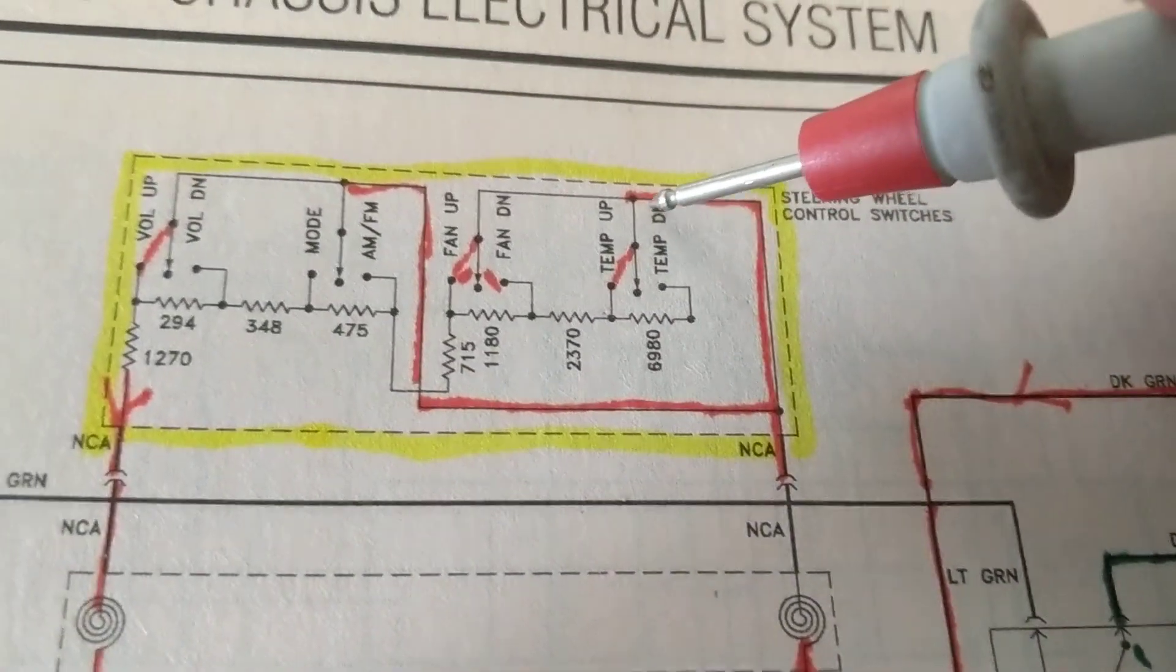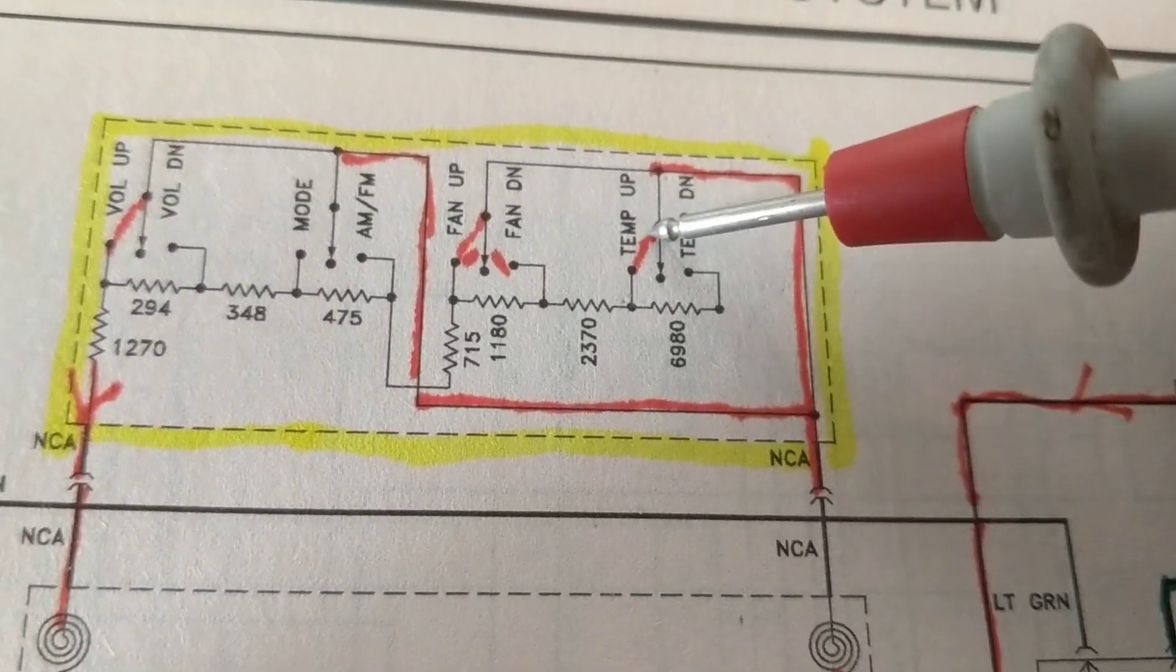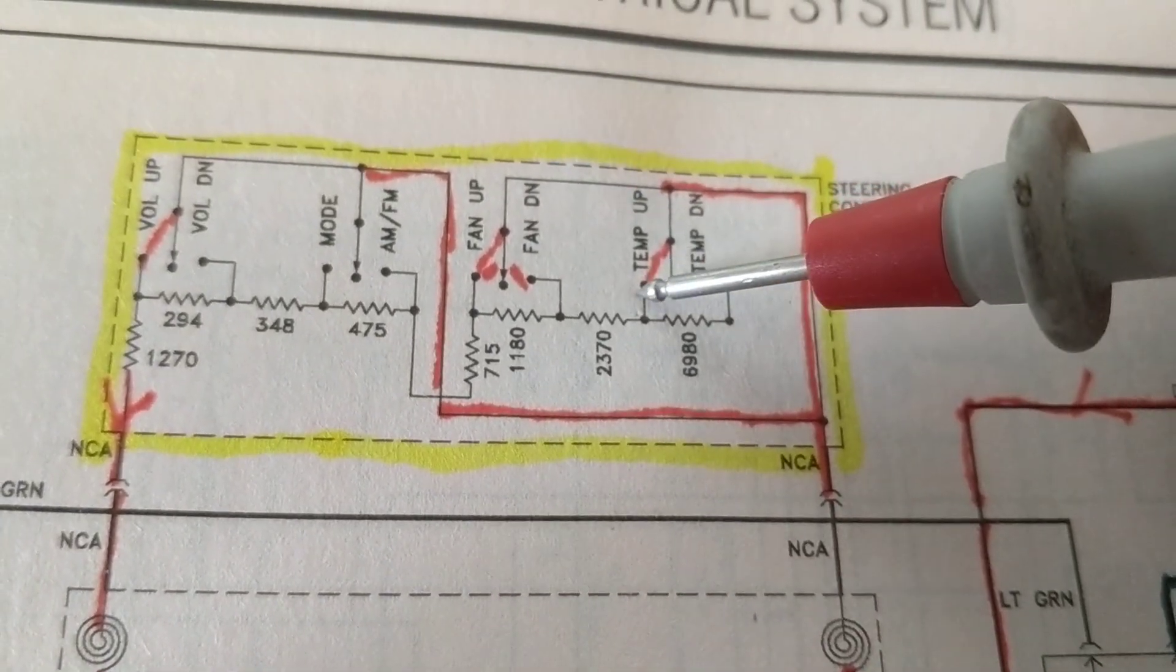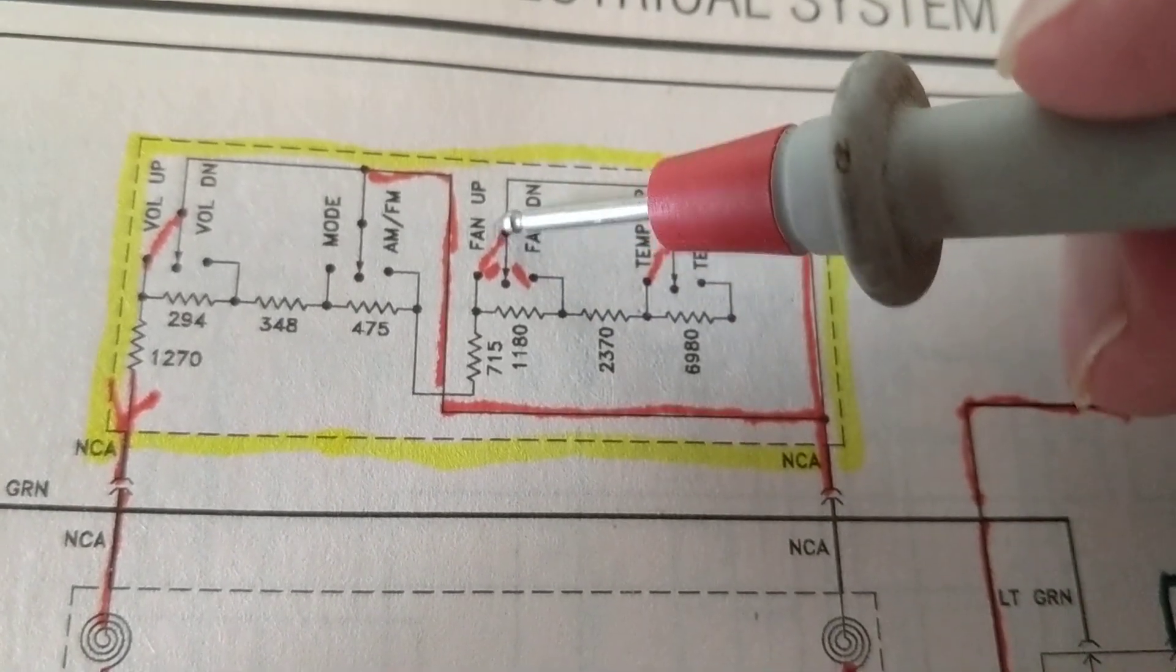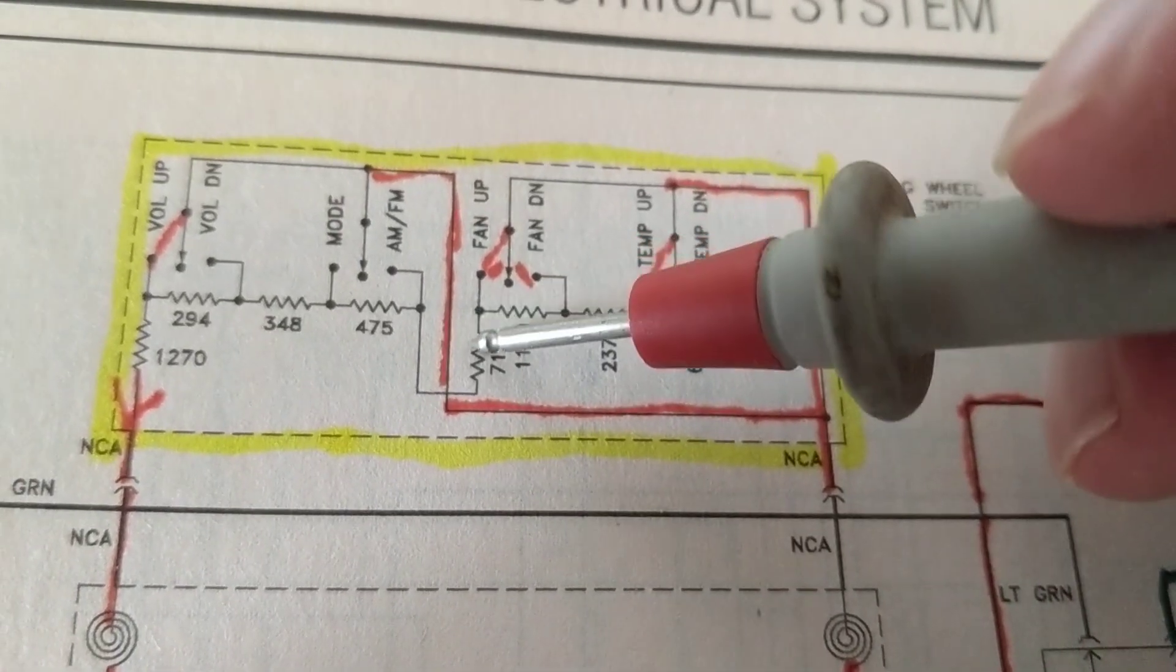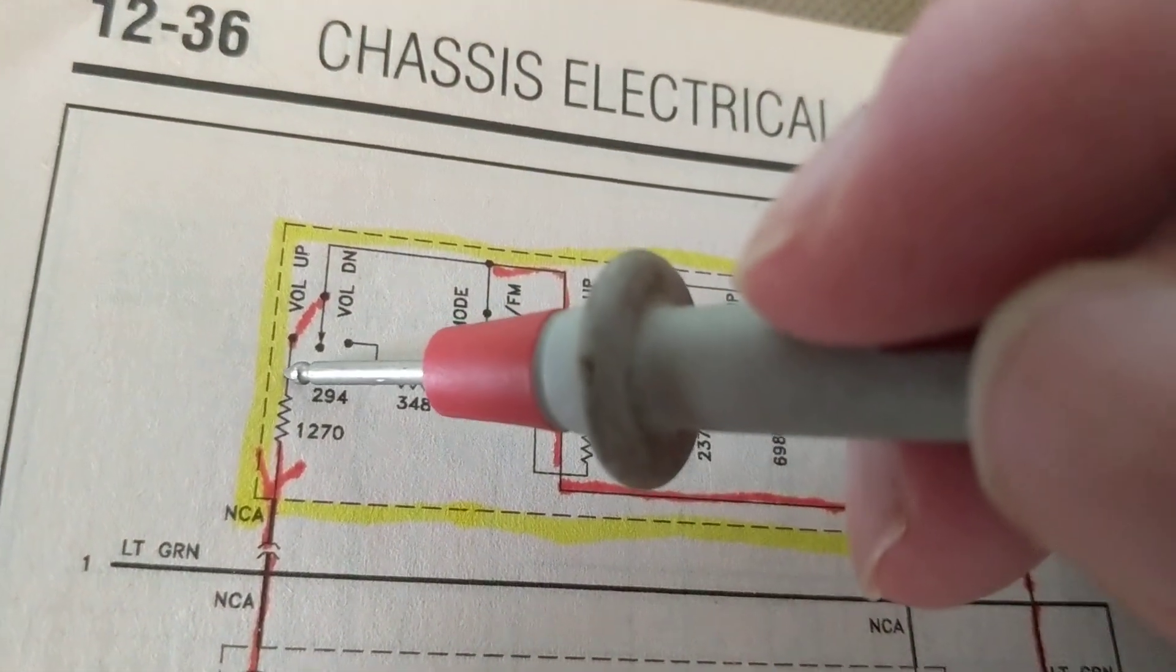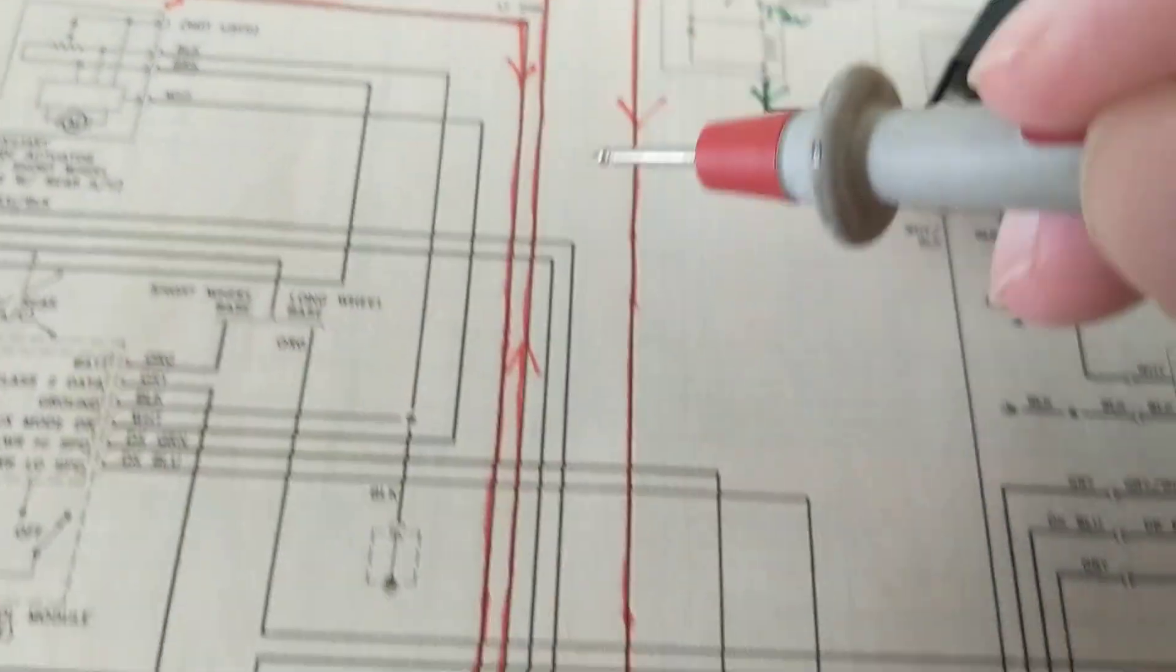Like we said, 12 volts comes in here. If your temperature up, I want to increase the temperature, where's the switch position? In this position from here to here, this is the one that flips. It flipped over here. We go through this resistor, we're not going up here because this hasn't been activated. We're going over here through this resistor 1180, through this resistor 715, through this resistor 475, through this resistor 345, through this resistor 294, through this resistor 1270, and where? Back to the other coil, back where? To this one.